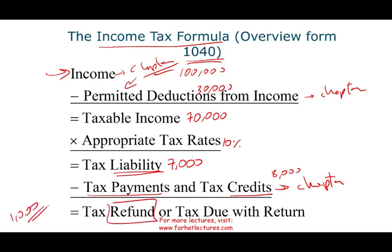Let's assume we only paid $5,000. Then we have a tax due of $2,000. So this is the overall picture of the income tax formula.